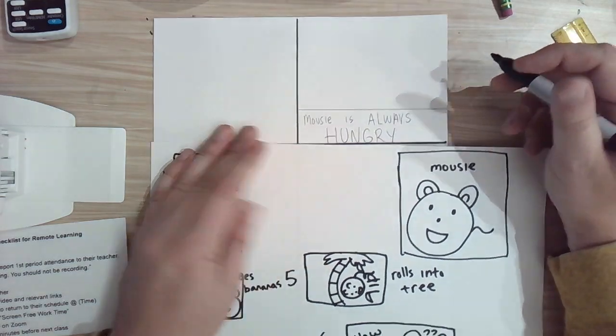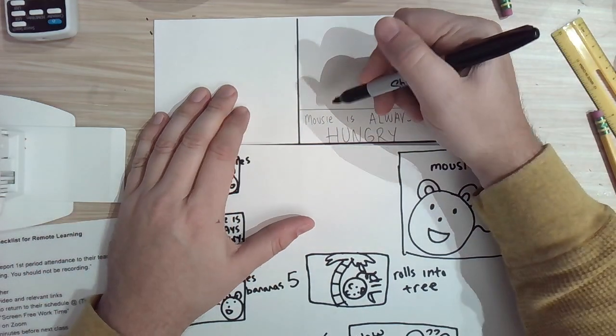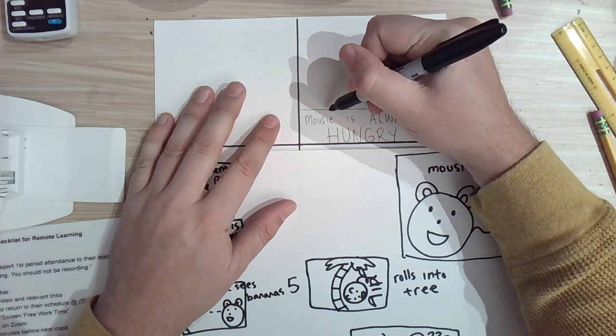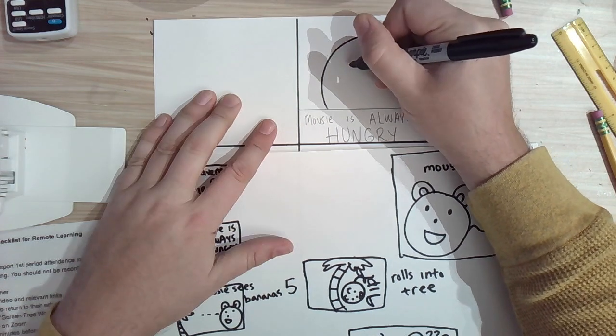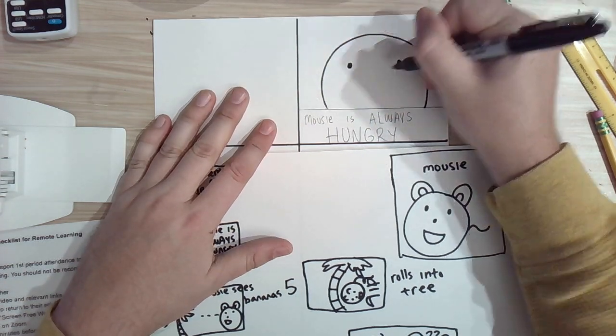Mousy is always hungry. So I want to make my mouse nice and big, right? This is the first panel where he's here and I'm going to draw him nice and big. There's nothing else going on. There's no need to highlight a background.